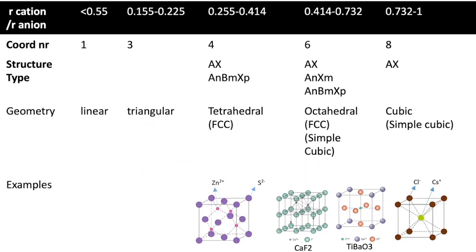We have structure types like AX, AnXm, and AnBmXp. AX means where the cation and anion have a ratio of 1 to 1. AnXm means there are a different number of cations and anions with different types of balances. And AnBmXp means we have three or more materials affecting the structure.